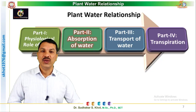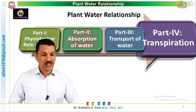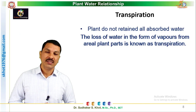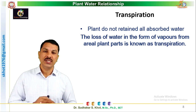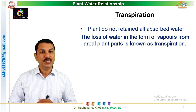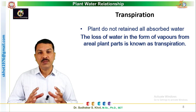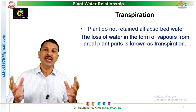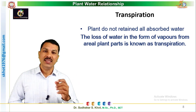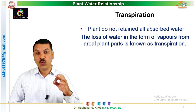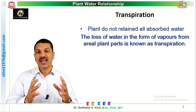Now the question is: whether all the water absorbed by the root and transported by the xylem is retained by the plants? No. A huge amount of that absorbed water is given out into the atmosphere in the form of water vapors. This loss of water in the form of water vapors from aerial plant parts is called transpiration.